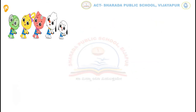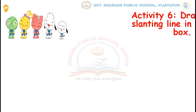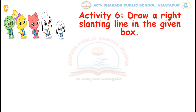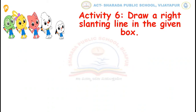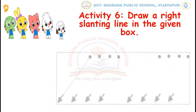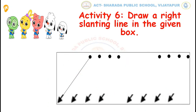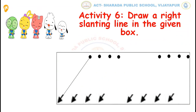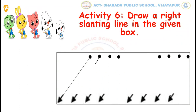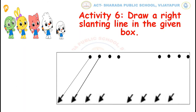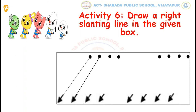Now, children, let us move to the 6th activity. In this activity, draw the right slanting line in the given box. For example, start from the dot and follow the arrow. In this way, you have to complete this activity.